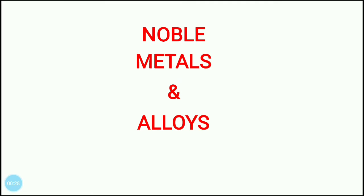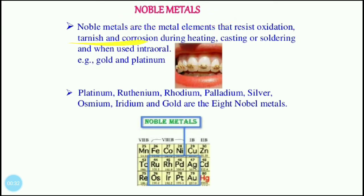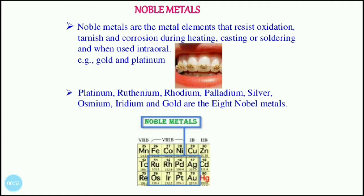Noble metals are the metal elements that resist oxidation, tarnish, and corrosion during heating, casting, or soldering, or when used intraorally — for example, in teeth — because they do not have any reaction. Gold, platinum, and silver are examples of noble metals.